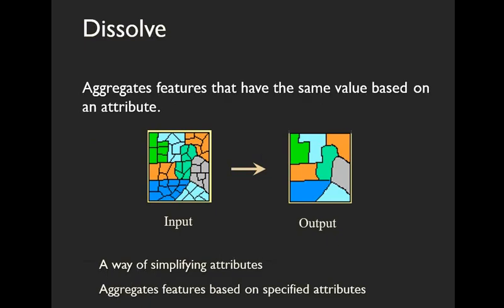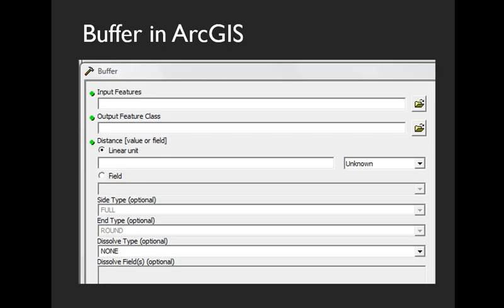Dissolve is used to aggregate common features that share an attribute value. It's a way of simplifying a dataset. It's important to know that in the buffer tool, you have the option to set the output features to dissolve. Sometimes it's useful to merge overlapping buffers into one shape. You do that using the dissolve type option in the buffer tool. You can also run dissolve as a standalone tool.